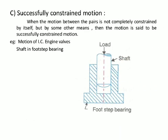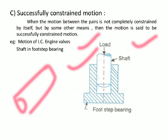The third type is successfully constrained motion. This occurs when the motion between the pairs is not completely constrained by itself but is made constrained by some other external means. For example, when a machine part moves, pressing opens a valve and then the valve closes automatically — this type of motion is called successfully constrained motion.